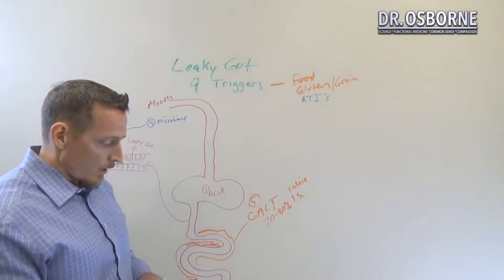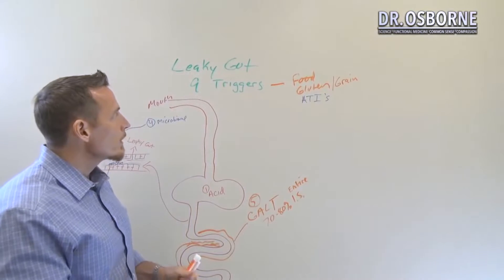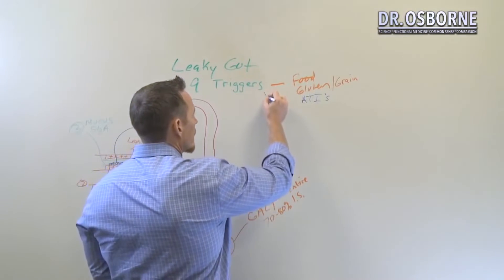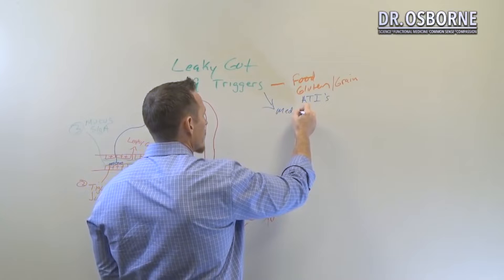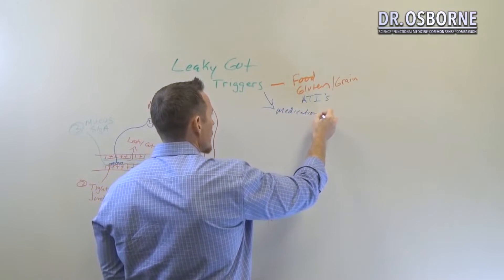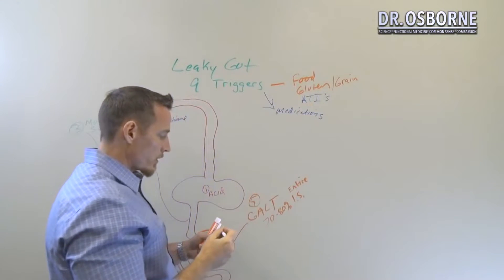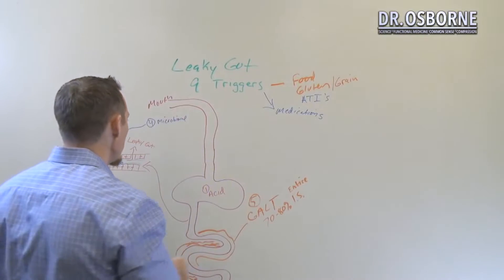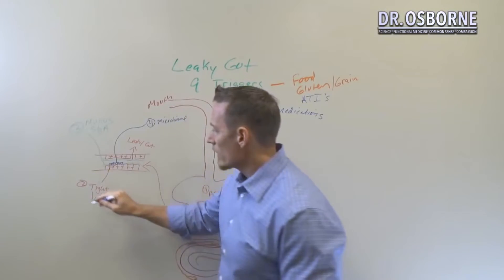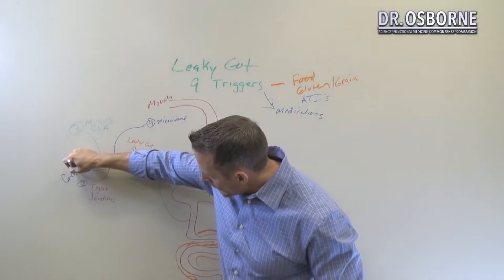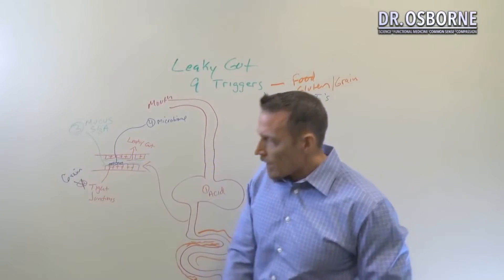Now one of the other triggers besides food. So food is a trigger. We can say that medications are a major trigger. There are a lot of different medications that can damage the GI tract. So whereas if gluten can actually damage tight junctions, grain can damage tight junctions, can knock them out.